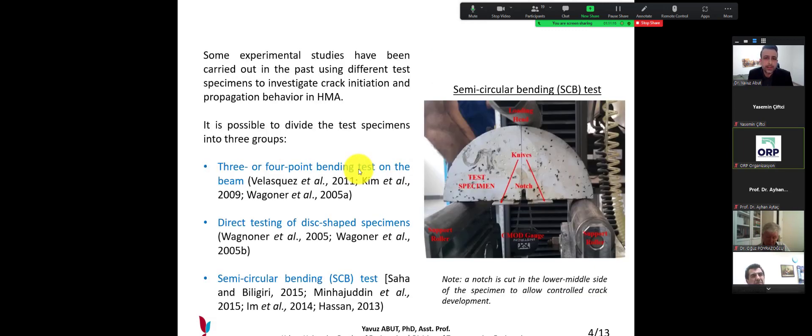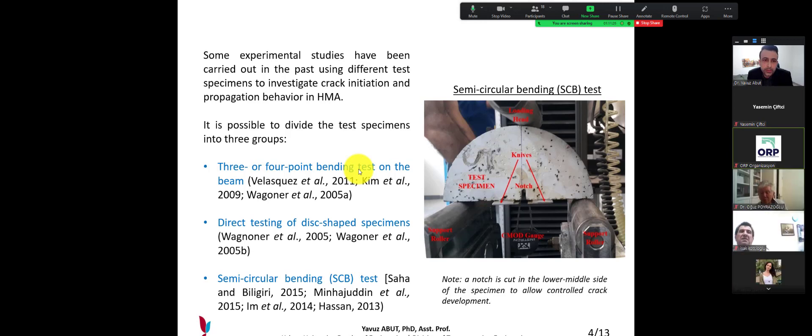Some experimental studies have been carried out in the past using different test specimens to investigate crack initiation and propagation behavior in hot mix asphalt. It is possible to divide the test specimen into three groups. First of all, concrete beams, a three or four point bending test on the beam, is used especially for concrete materials.